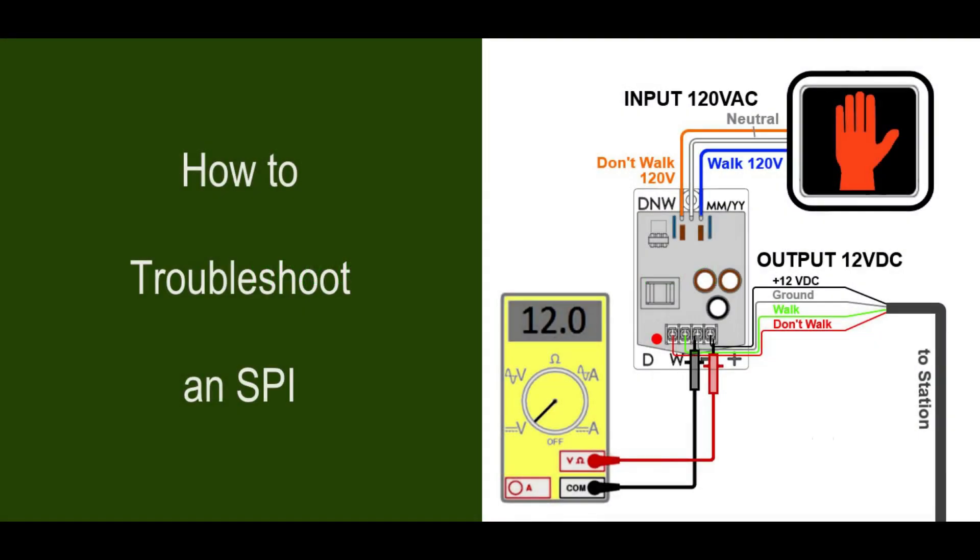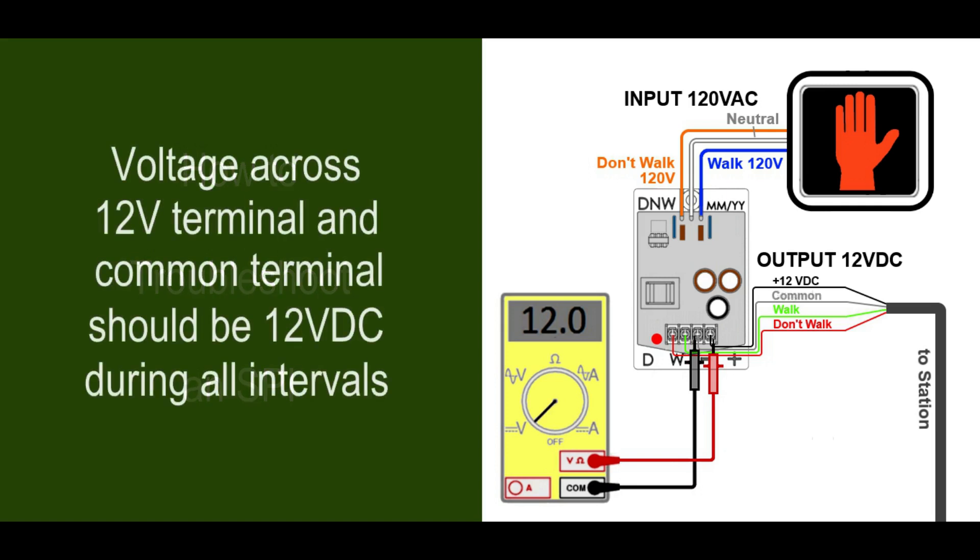With the SPI 120 volt inputs wired to the ped head's walk and don't walk terminals, the output voltage across the two rightmost terminals should be 12 volts DC at all times. Set your multimeter to measure DC voltage and place the leads on those two terminals as shown. It should display roughly 12 volts regardless of what interval the walk cycle is in.